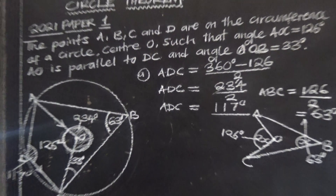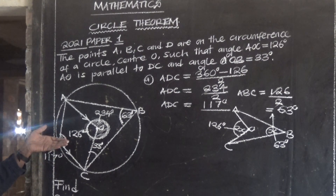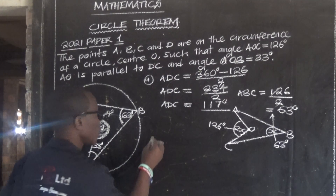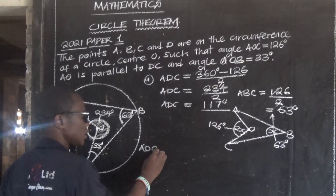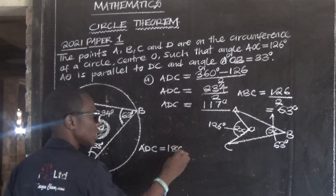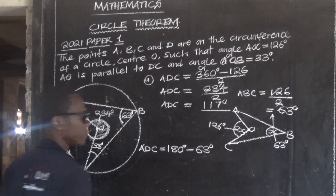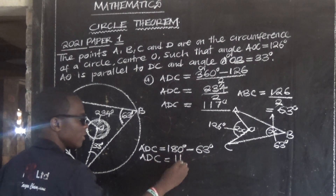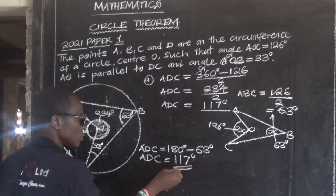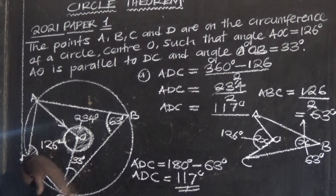So angle ABC is 63 degrees. Now we want to find angle ADC. Since opposite angles of a cyclic quadrilateral add up to 180, angle ADC equals 180 minus 63 equals 117 degrees. So you can use either of these two methods.